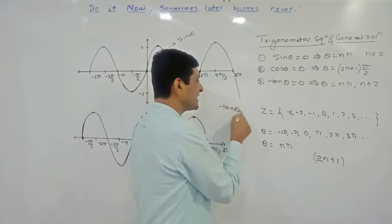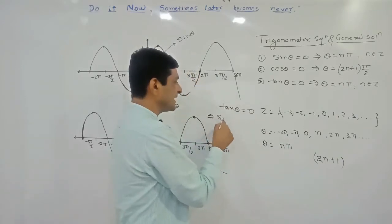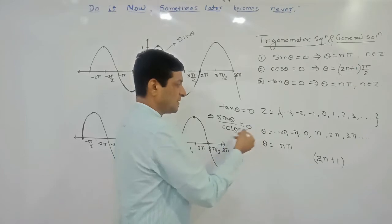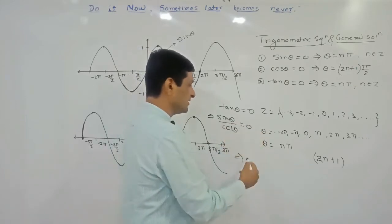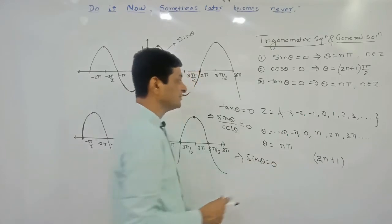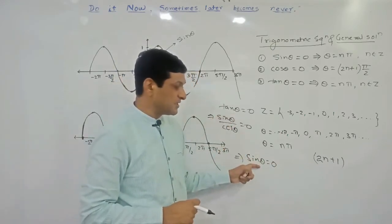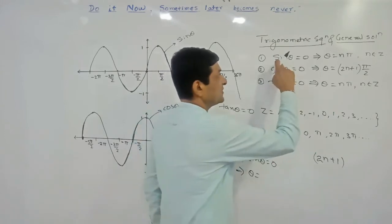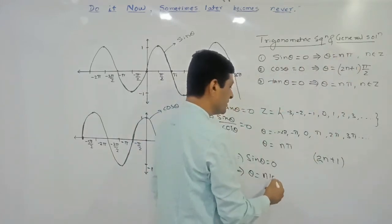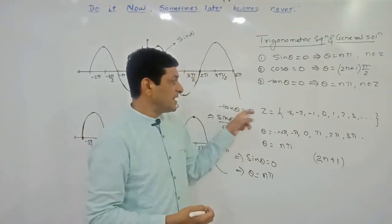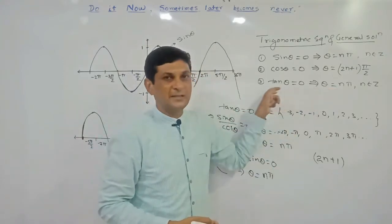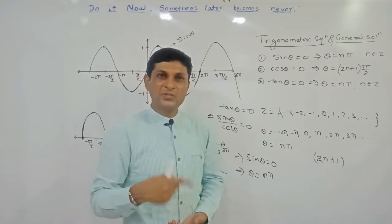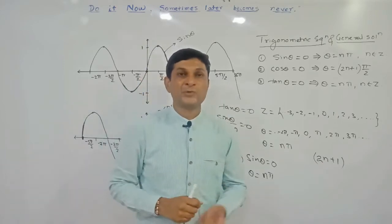For tan θ = 0: we can write tan θ = sin θ / cos θ. Setting this equal to zero and multiplying both sides by cos θ gives sin θ = 0. From the first formula, sin θ = 0 implies θ = nπ. Therefore tan θ = 0 implies θ = nπ. This is the proof of the third important formula for the general solution of a trigonometric equation.